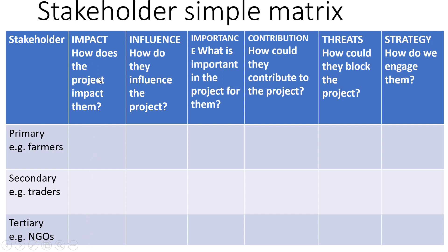The third column identifies the influence — how do the stakeholders influence the project? Then there is importance: what is important in the project for the stakeholders? We have to analyze that as well.